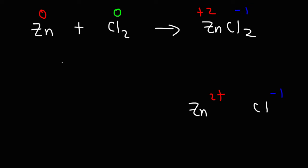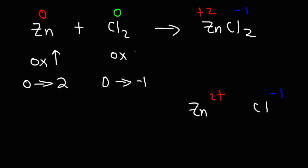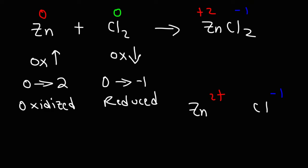For zinc, the oxidation state went up — it went from zero to two, which is an increase. For chlorine, it went down from zero to negative one, so the oxidation state was reduced. The substance that is oxidized is the one in which the oxidation state goes up, so zinc was oxidized and chlorine was reduced. Therefore, because zinc was oxidized, it is the reducing agent, and because chlorine was reduced, it is the oxidizing agent.